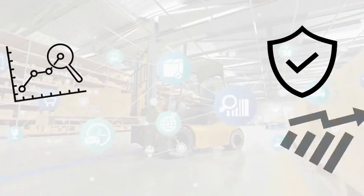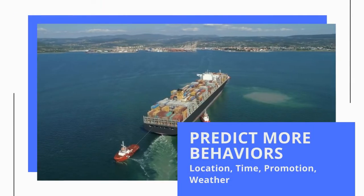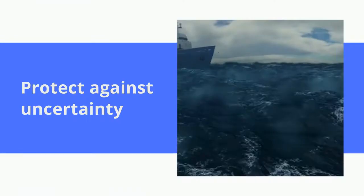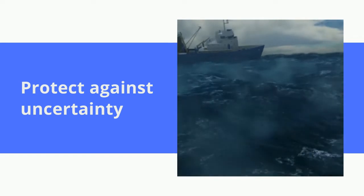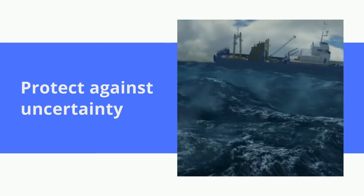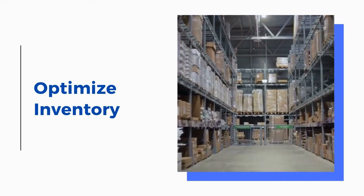To be ready, your organization needs to take a three-step approach: predict more behavior across location and time, protect against surprises from real-world uncertainty, so that you can deliver against the service level your customer counts on, no matter what happens.